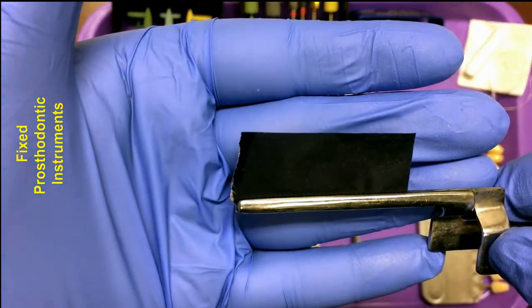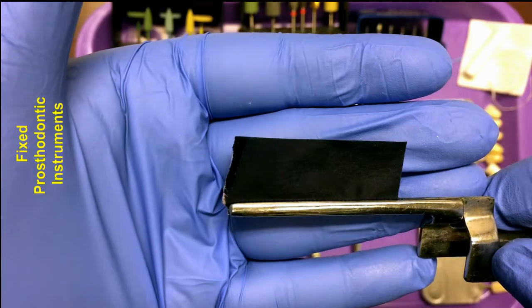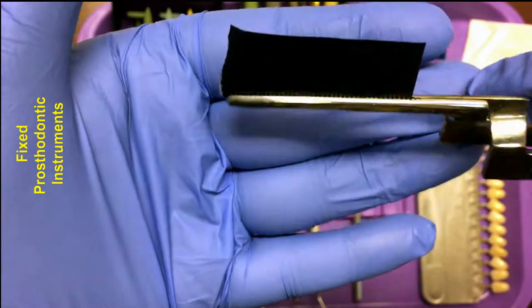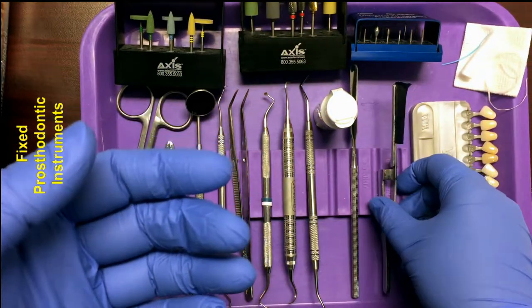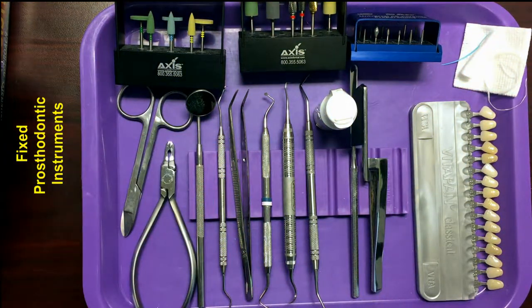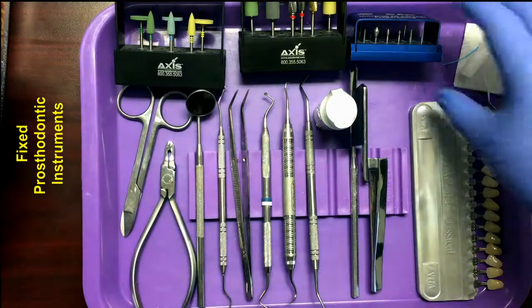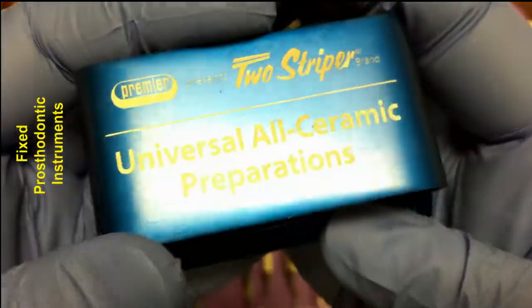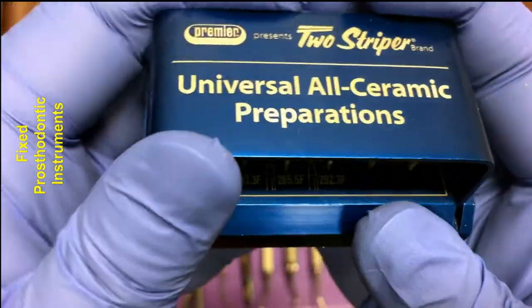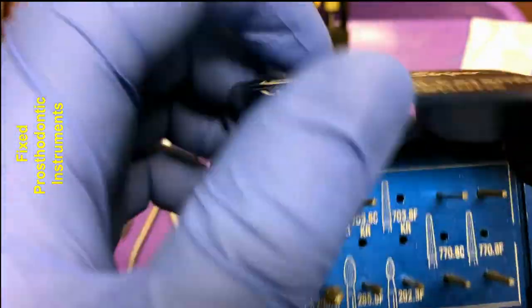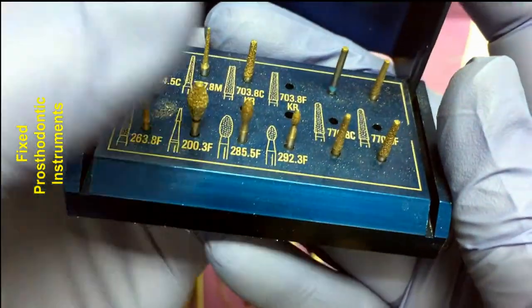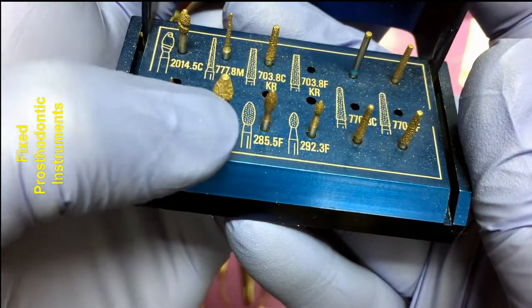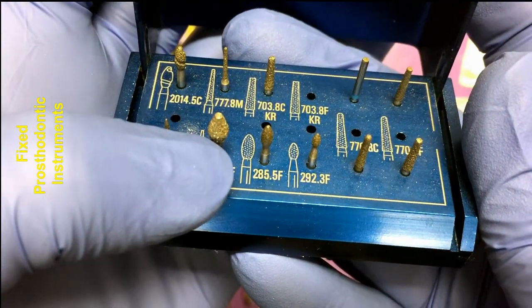Next, we have burrs. These are prep burrs used to prepare the teeth. And these are diamonds. You can see the rough surface texture. Diamond burrs are used to quickly reduce the bulk structure of the teeth because they're made with little diamond chips all over the surface. They will reduce the tooth very quickly. So diamond burrs are used to prepare the teeth.